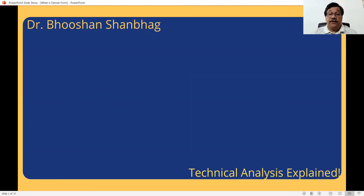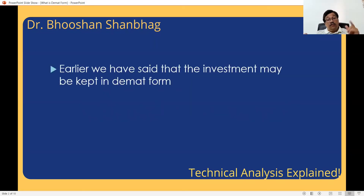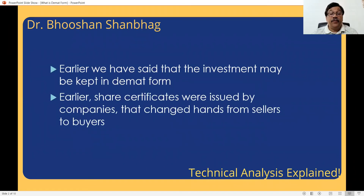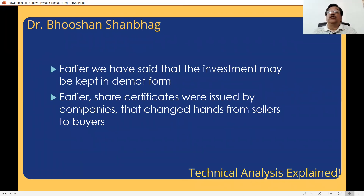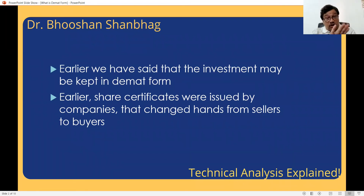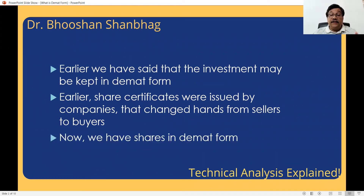What is the meaning of DMAT? Let us understand. You've seen earlier that investment may be in a DMAT form — what exactly does this mean? Consider earlier, say about 20 years ago — what was the scenario? The shares of companies used to be on certificates. Whenever somebody sold shares, the share certificate would be sent to the company with proper documentation. On the backside of the share certificate, the company would enter who the new buyer is and send it back to you. So shares used to be said to be in physical form.